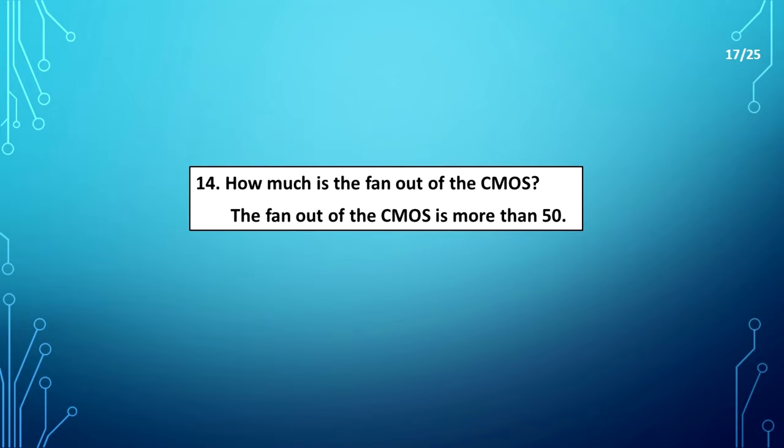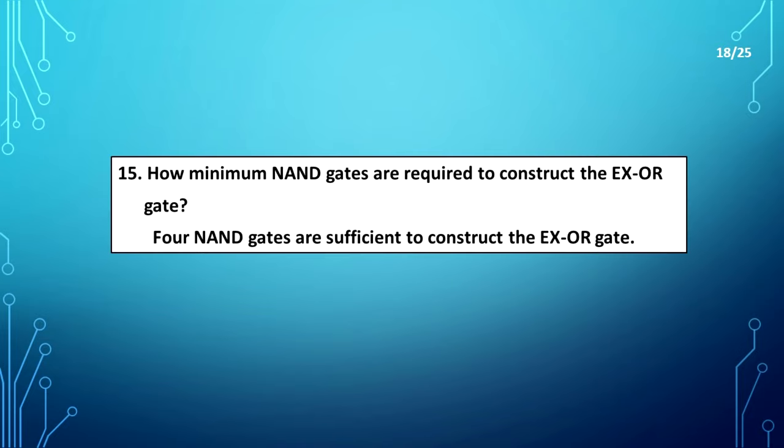How much is the fan-out of the CMOS? The fan-out of the CMOS is more than 50. How many minimum NAND gates are required to construct the XOR gate? Four NAND gates are sufficient to construct the XOR gate.